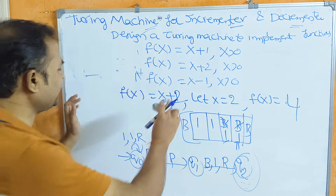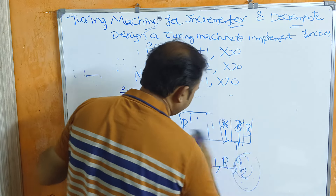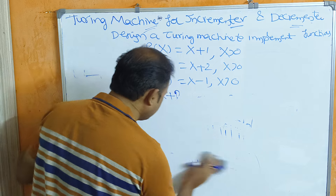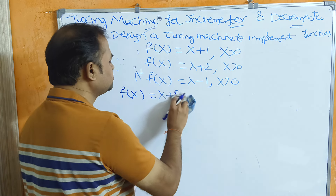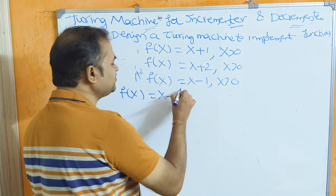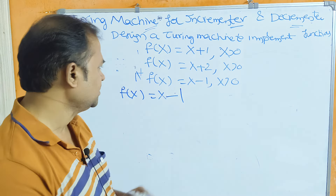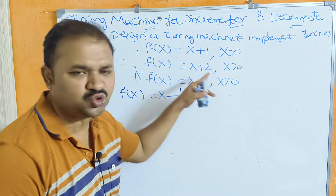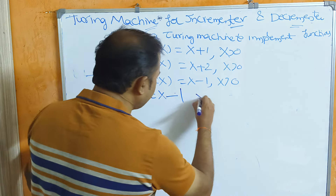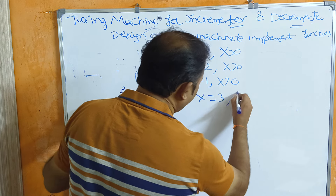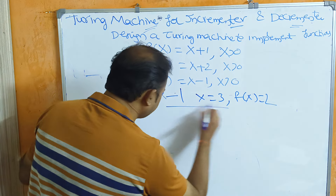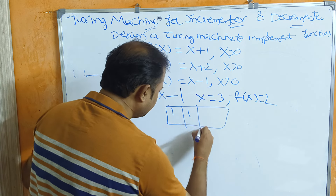Now we will write f(x) = x-1. This is our last function in this problem — we will write a decrementer. If we solve the problem, suppose x = 3, then f(x) = x-1 = 2. We can solve the problem.